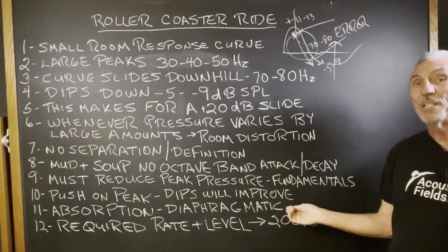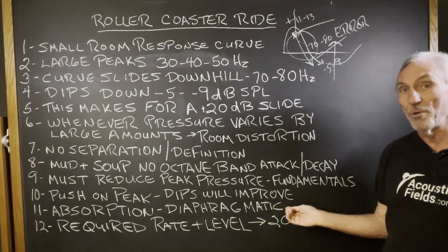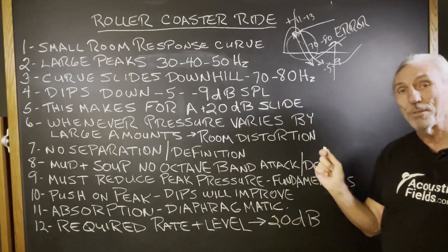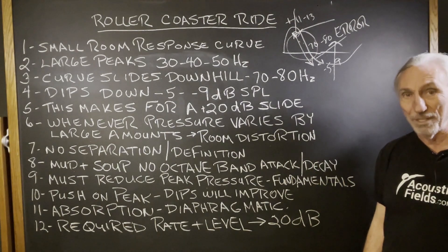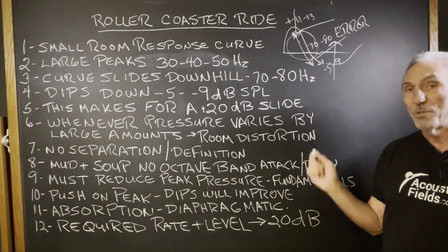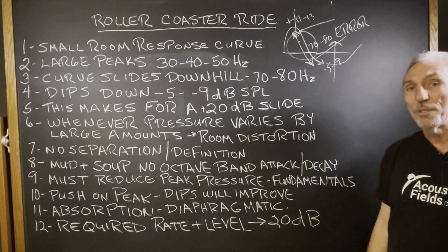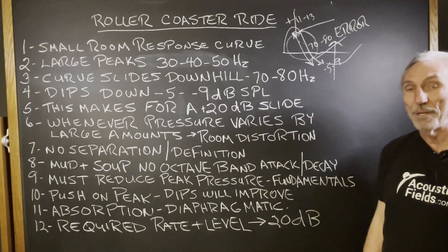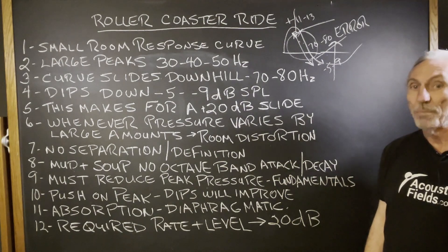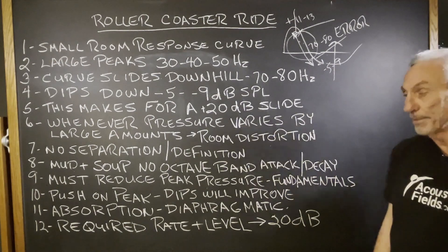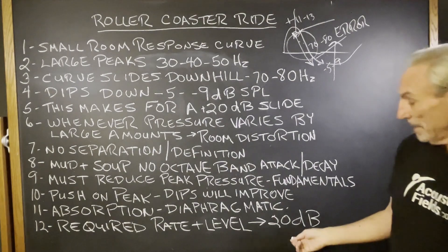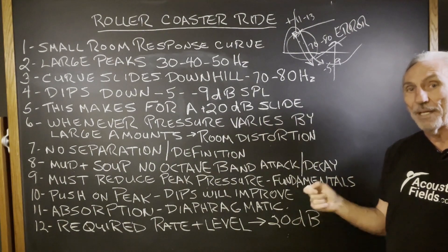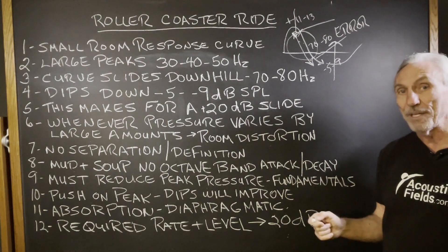Diaphragmatic absorption is the only absorption that has the horsepower to handle these double digits. Boxes filled with building insulation can't do it. You can have two, three, four foot thicknesses and still not have the proper rate and level impact here. It's too big a task for limp mass materials. You've got to go after rate and level — you've got to be able to get a lot at 30, a lot at 40, a lot at 50.